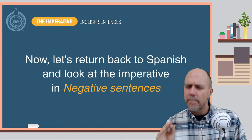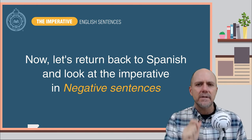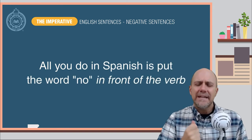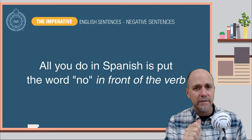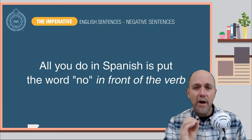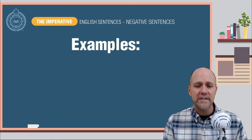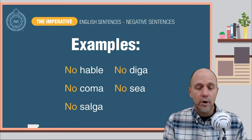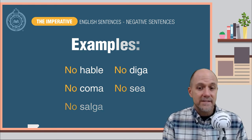Now, let's return back to Spanish and look at the imperative in negative sentences. In Spanish, to form a sentence in the imperative with the negative, all you do is put the word 'no' in front of the verb. Here are some examples: No hable. No coma. No salga. No diga. No vaya.